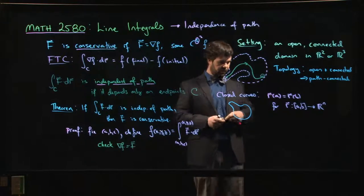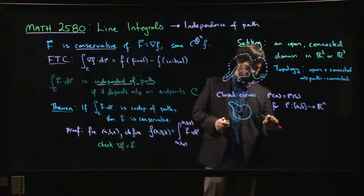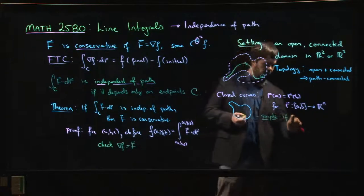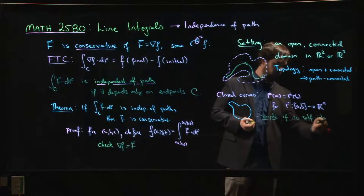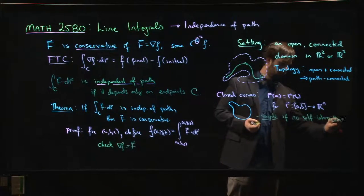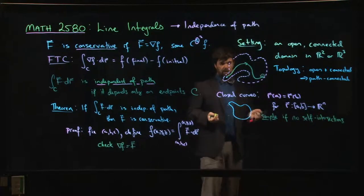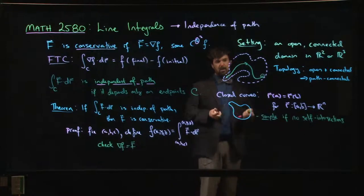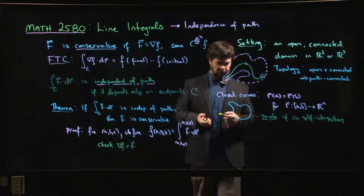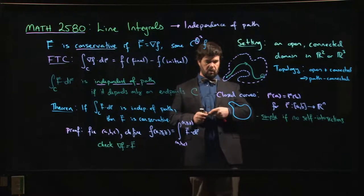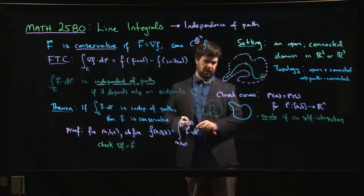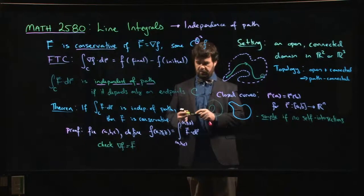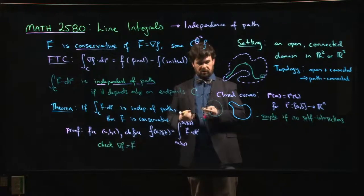A closed curve is called simple if there are no self-intersections. This rules out things like a figure-eight curve. We don't want curves that cross over themselves — for example, something with a self-intersection point would not be simple.